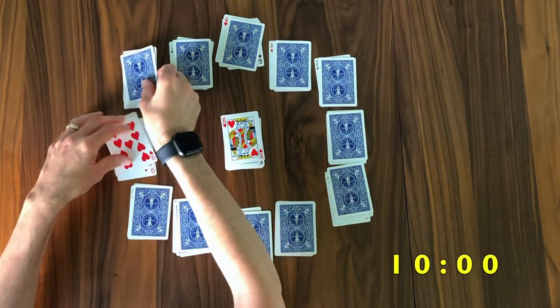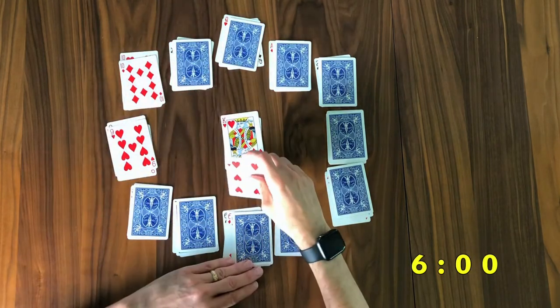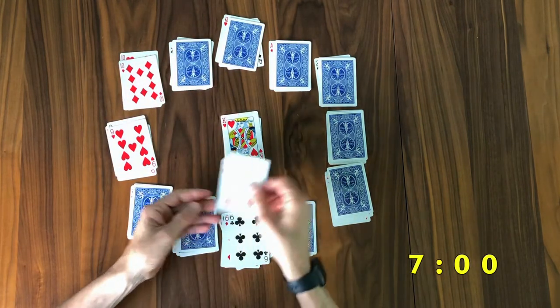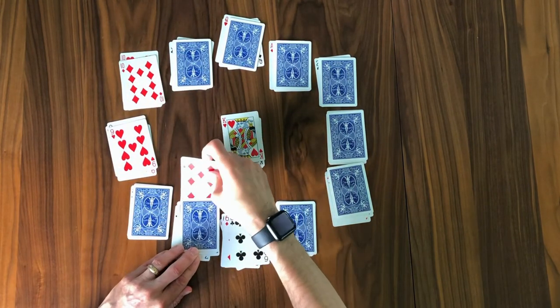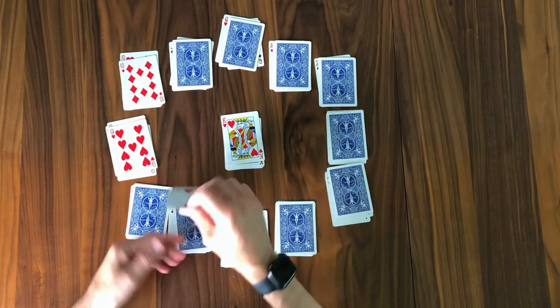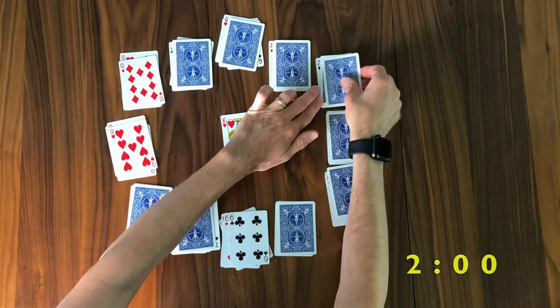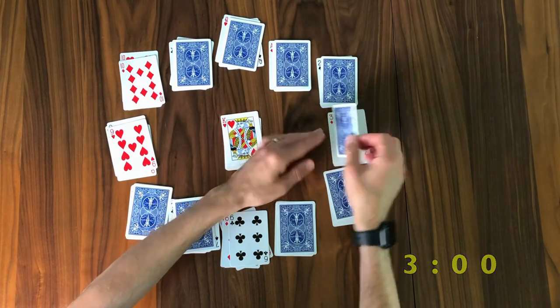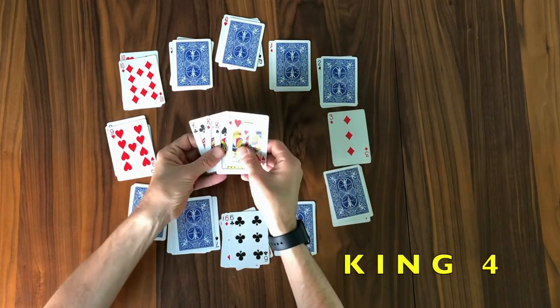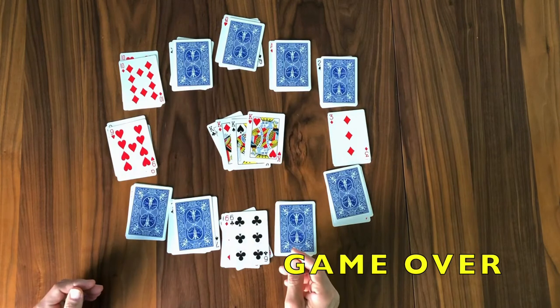We are not looking good. Hopefully, we can make some progress here before that fourth king presents itself. Here's a seven beneath the seven o'clock, and a two beneath the two o'clock position. Here's a three beneath the three o'clock position. Oh, and unfortunately, that is our fourth king, which means that it was a valiant effort, but the game is over.